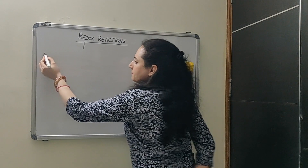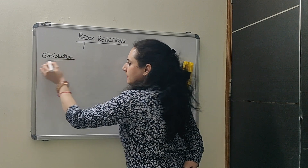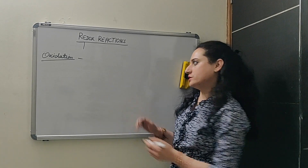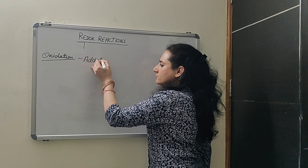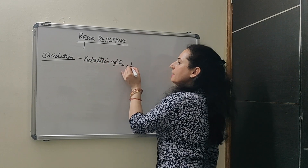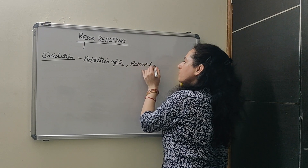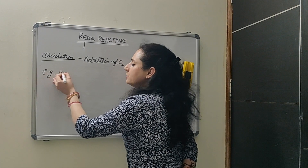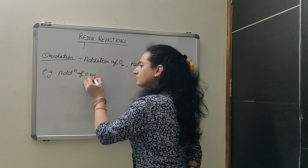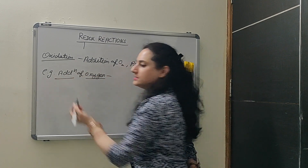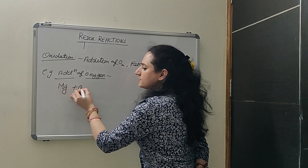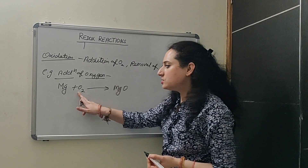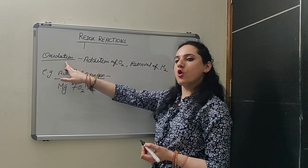First one: Oxidation. Oxidation means addition of oxygen and removal of hydrogen. Let's take an example. First one: addition of oxygen. For example, magnesium plus oxygen forms magnesium oxide. That is addition of oxygen, which is called oxidation.